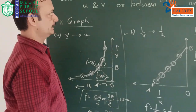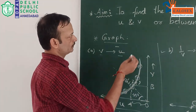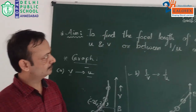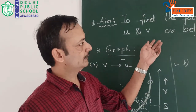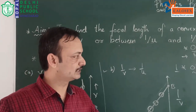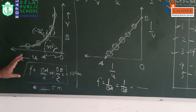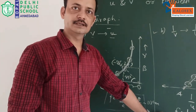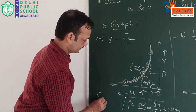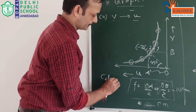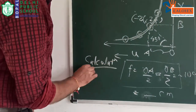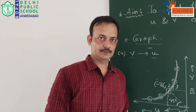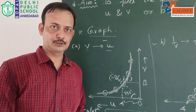This completes the experimental calculations for focal length from the graphs. At the end of the record you write the result: the focal length of the lens is 10 centimetres, as obtained from the two graphs. You have to show this calculation as your result. This completes the experiment — thank you so much.